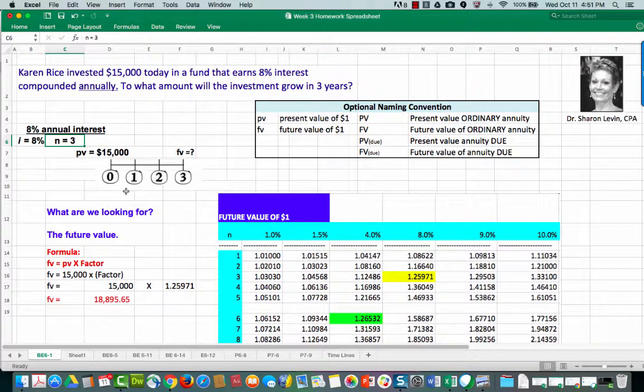I drew this timeline to help us stay organized. We have at time zero which is right now the investment is made and the present value is $15,000. This $15,000 will earn interest over the next three years and then at the end of three years it will have a new value which will be greater than $15,000. We just don't know by how much quite yet.